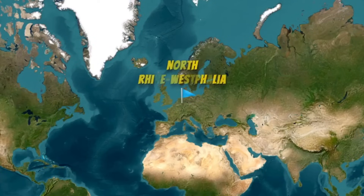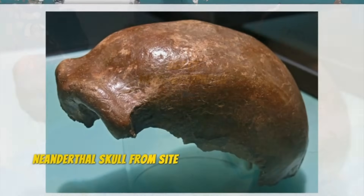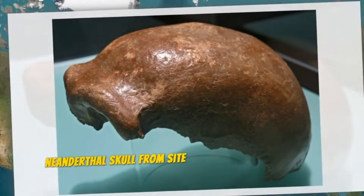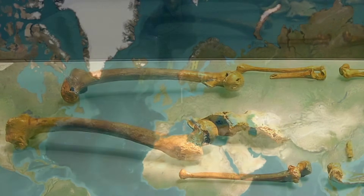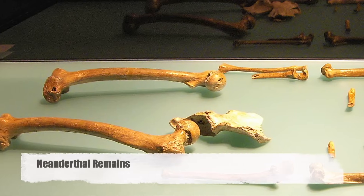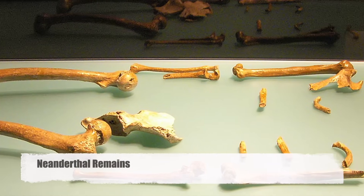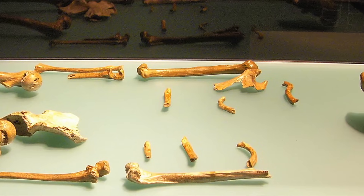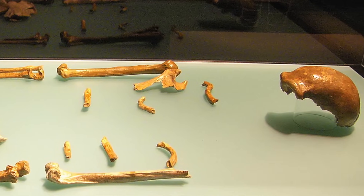The most reliable method for identifying interbreeding with archaic humans is by sequencing ancient DNA from their fossil remains and comparing it with the DNA of modern humans. This approach has been successfully applied to Neanderthal and Denisovan fossils, some dating back as far as 200,000 years in Eurasia.